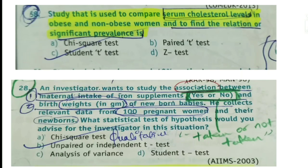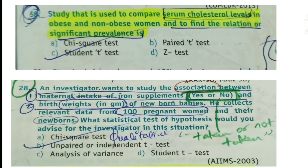Question 28: 'An investigator wants to study the association between maternal intake of iron supplements and birth weights in grams of newborn babies, collecting data from 100 pregnant women and their newborns. What statistical test would you advise?' Chi-square is ruled out because birth weight in grams is quantitative data. Analysis of variance is ruled out because ANOVA applies when there are more than two groups. Here there are two groups — 100 pregnant women and their newborns — so the answer is unpaired (independent) t-test. Both unpaired t-test and Student's t-test are correct, but the more specific answer is unpaired t-test.